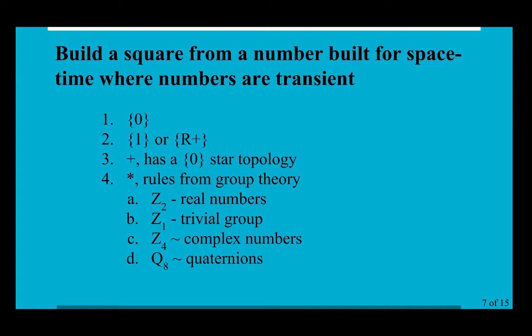So we also have two operators. The plus operator, and it's always going to have a star topology, which means everything connects to something and that something is zero. And we're going to have the multiplication operator, and the rules for that come from group theory. For the real numbers we use the group Z_2, it's called a cyclic group.